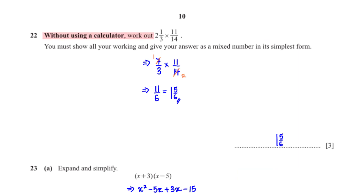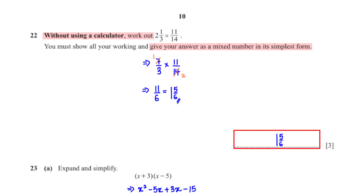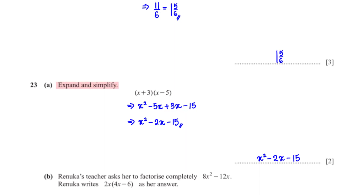Without using a calculator, work out 2⅓ × 11/14. Show all working and give the answer as a mixed number in simplest form. First convert 2⅓ to an improper fraction: (3×2+1)/3 = 7/3. Then 7/3 × 11/14: cancel 7 with 14 (÷7), giving 1/3 × 11/2 = 11/6. Converting to a mixed number: 6 goes into 11 once with remainder 5, so the answer is 1⅚.